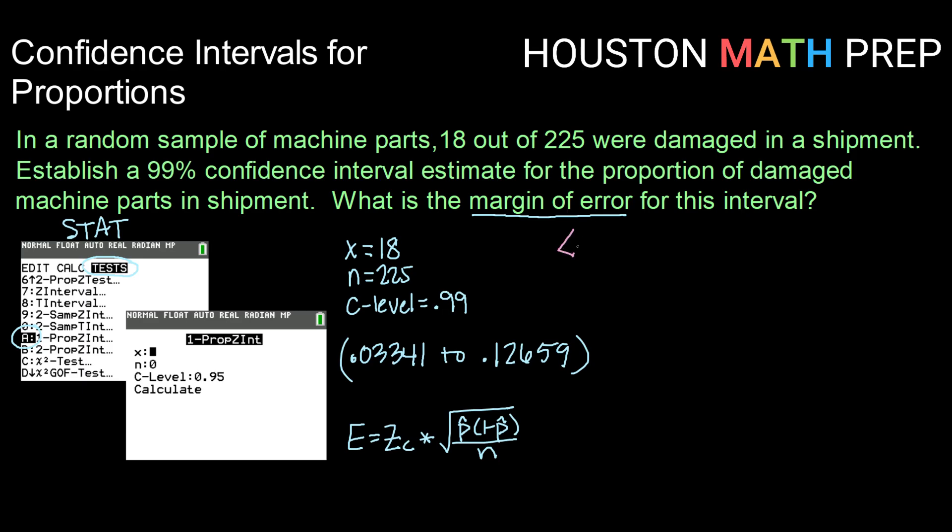Remember how we create confidence intervals. Our interval from A to B is centered at our point estimate, in this case, p hat. And it is calculated by adding the margin of error and subtracting the margin of error. That means that the total width of the interval is the margin of error plus the margin of error, or two times the margin of error.